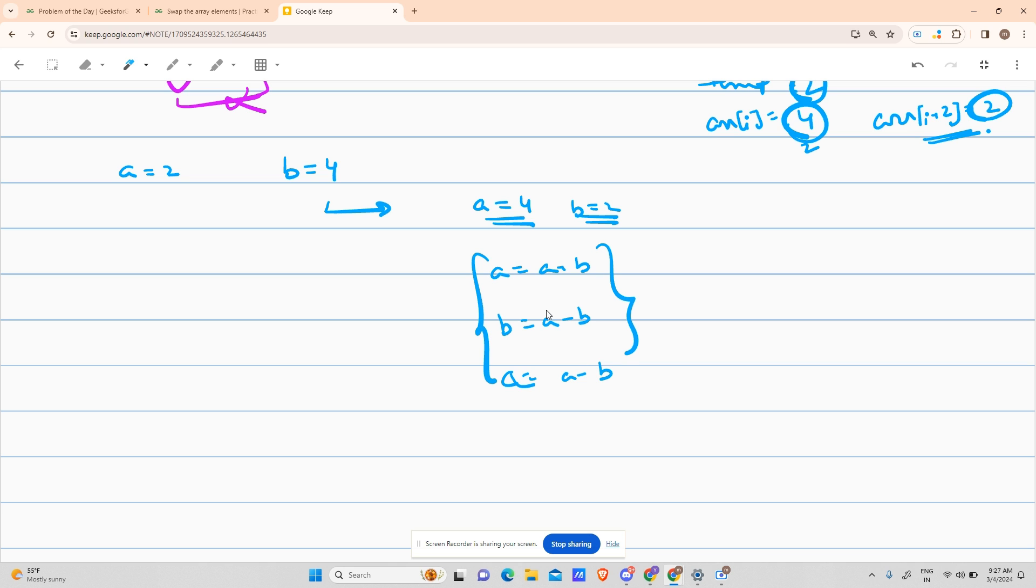So what is happening here? a is storing 2, b is storing 4, so a will be storing 2+4 = 6. Now b will be storing a-b, that is 6-4 = 2. So you can see we have completed one requirement: b equals 2. And after that, a equals a-b, 6-2 will give me 4. So a equals 4 and we have swapped them correctly.